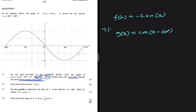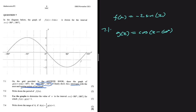We're going to draw the graph on the same set of axes that f(x) is on. We have our equation cos(x - 60°). Instead of substituting every degree — which would take the whole day — we're going to use intervals of 30 degrees. So we'll substitute -180°, then -150°, -120°, and so on.